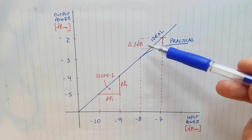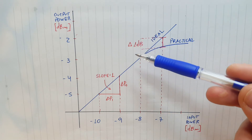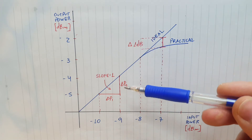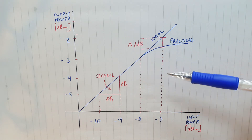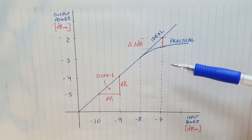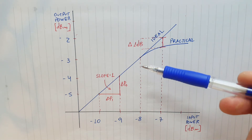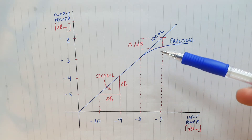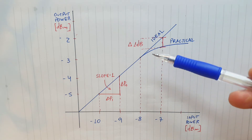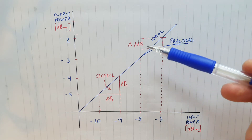The 1dB compression point parameter is related to the transition from small signal to large signal behavior. We need to keep in mind that a practical amplifier has limited output power, so at some point the amplifier starts to saturate and compress the output.